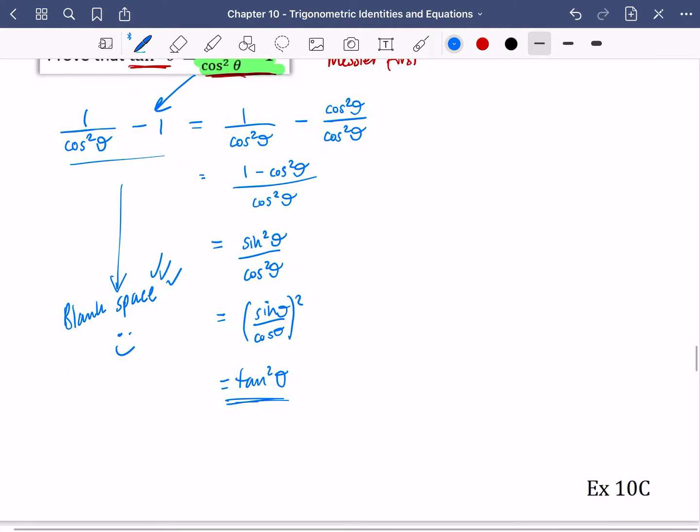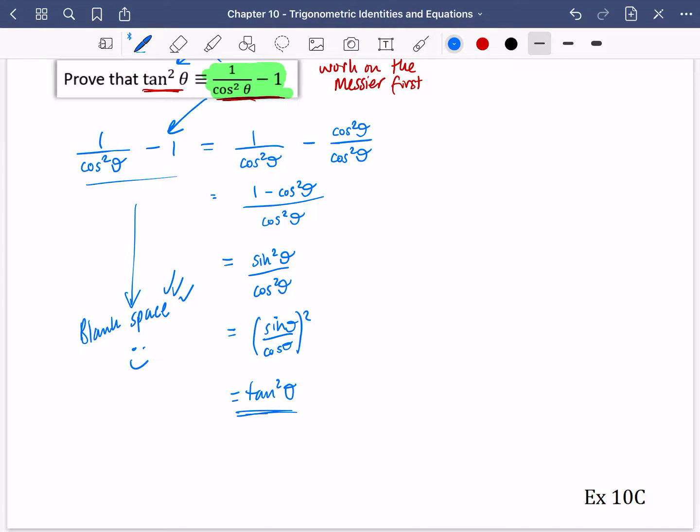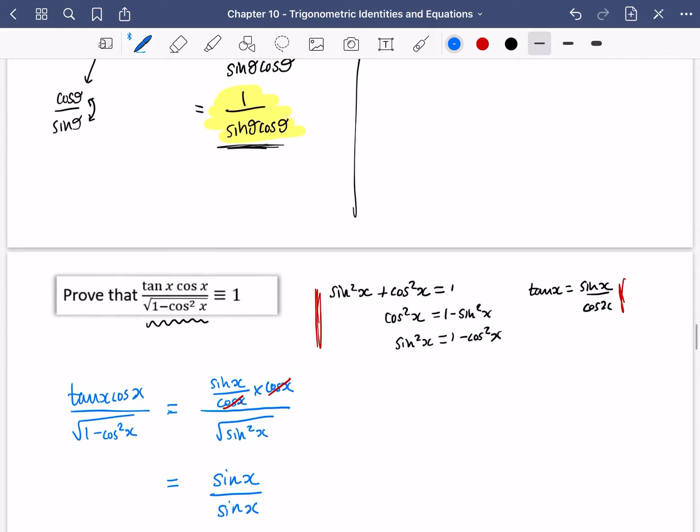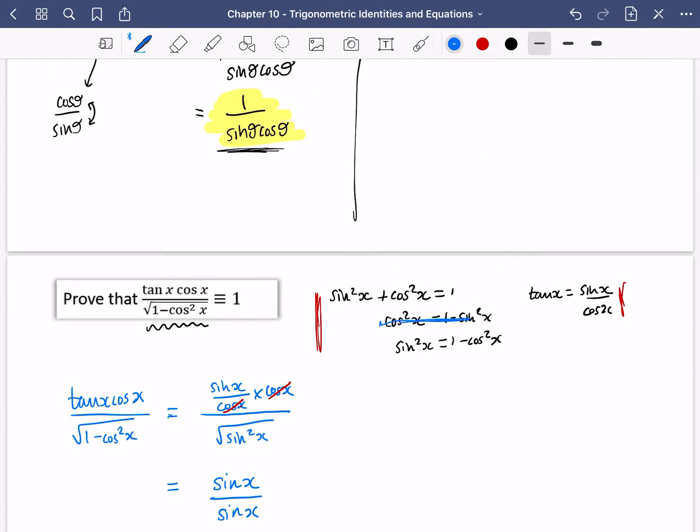So you can now have a go at doing exercise 10c. I expect you to find this exercise tricky. Let's start with the messier side. Change tan to sine and cos. Combine any fractions together. And my last tip is to look out for things that look like this. The shame I scribbled on it. Look out for these kinds of things. They will help you.